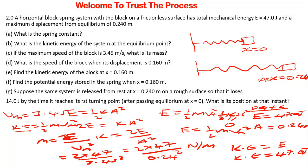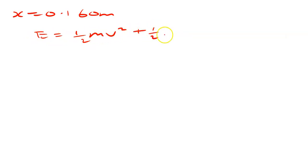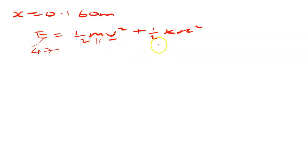Part D is asking: what is the speed of the block when its displacement is 0.160 meters? The value of x is 0.160. We can use the first equation: E equals one-half mv squared plus one-half Kx squared. We are looking for the speed. We know the total energy is 47, the mass has been found from the previous question, K is also known, and x has been given.